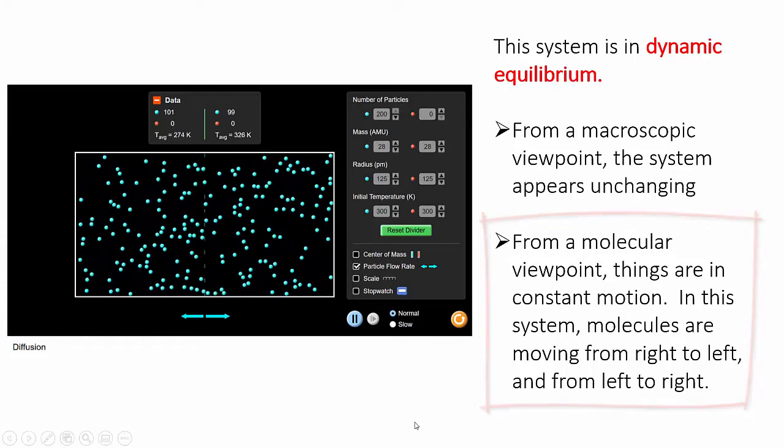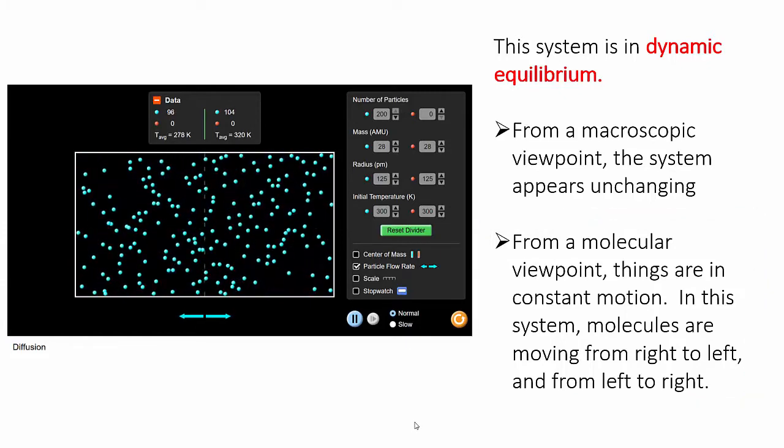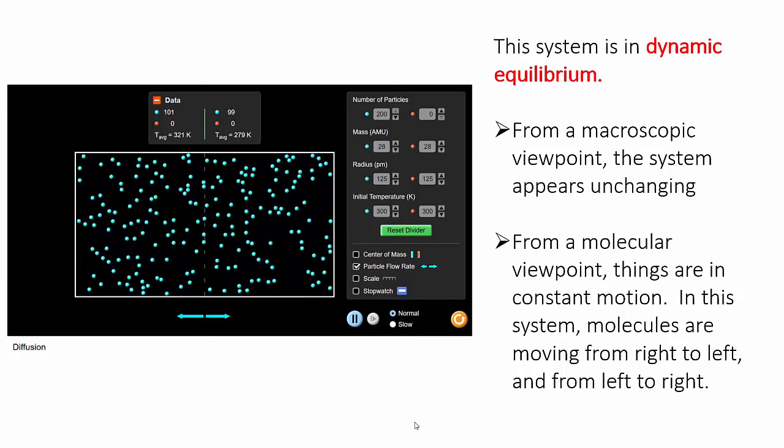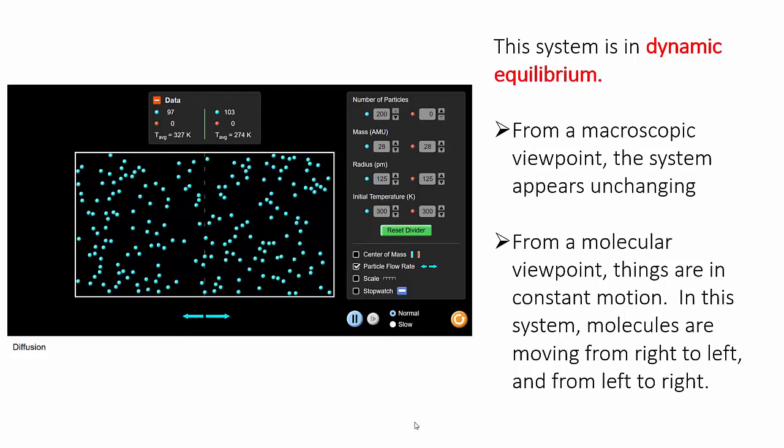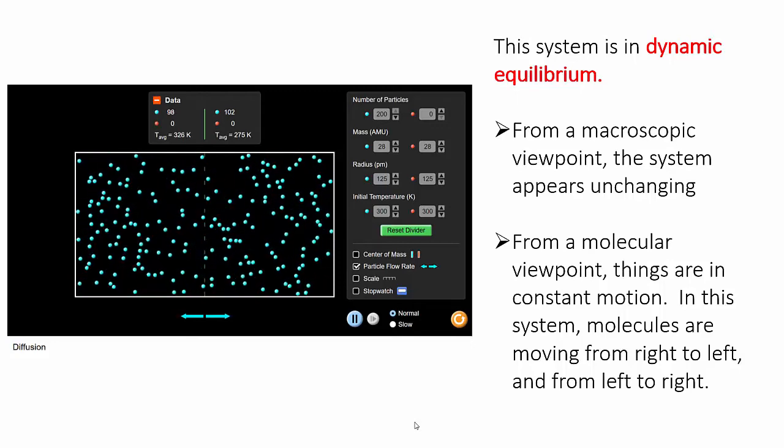This example is a simple physical system. No chemical reaction is occurring. It's merely gas atoms bumping around in a container. But the idea of dynamic equilibrium can also be applied to chemical reactions.